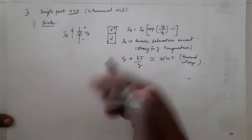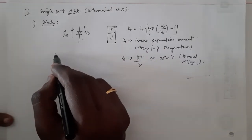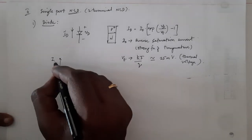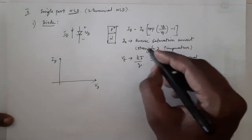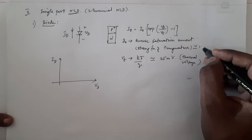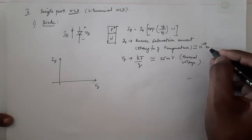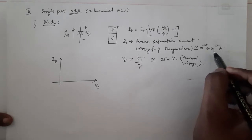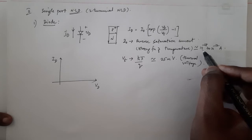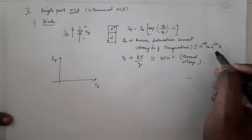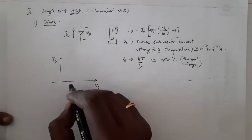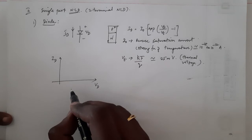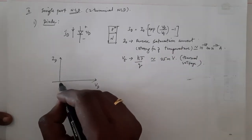Since the relationship is nonlinear, let us plot the IV characteristic. We plot ID on the y-axis and VD on the x-axis. The value of I₀ is approximately in the range of 10⁻¹⁸ to 10⁻¹² amperes — roughly in the femto to pico ampere range.